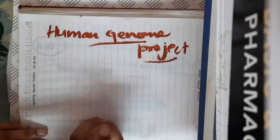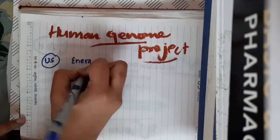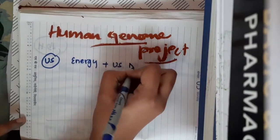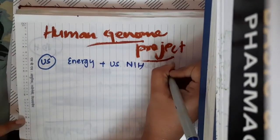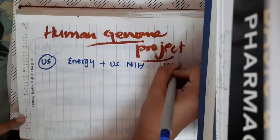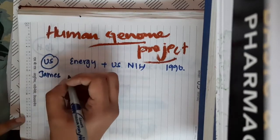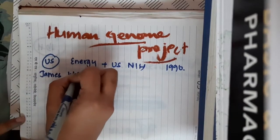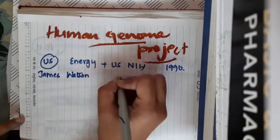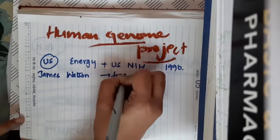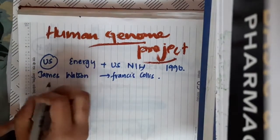This human genome project was started by US Department of Energy, together with US National Institute of Health, in 1990. James Watson, who is the co-discoverer of structure of DNA, was the head of this project.